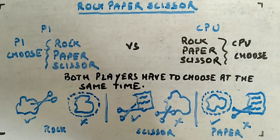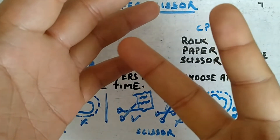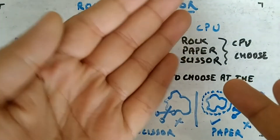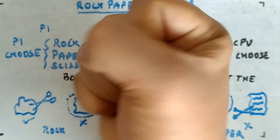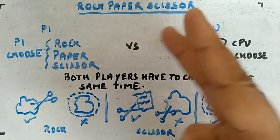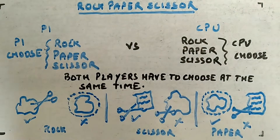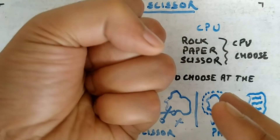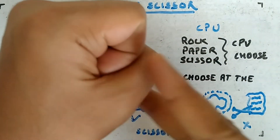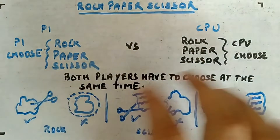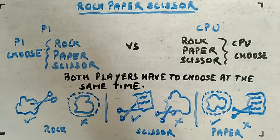In real life, you play with your hands like this. This is paper, this is rock - paper can wrap the rock so paper will win. Scissor can cut paper so scissor wins. Scissor cannot cut rock so rock will win and the player with rock wins.